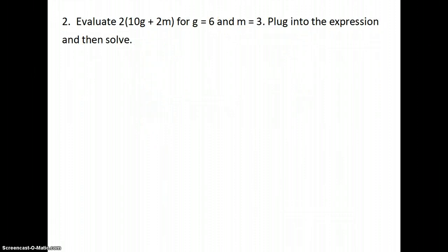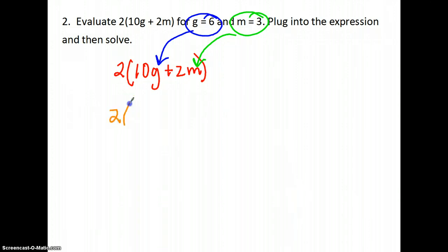The next one is evaluate 2 times the quantity 10g + 2m for g = 6 and m = 3. So I'm going to write my original problem: 2 times (10g + 2m). And g = 6, so that's going to be plugged in there. And m = 3, that's going in here. So if I write it again, I have 2(10 × 6 + 2 × 3).